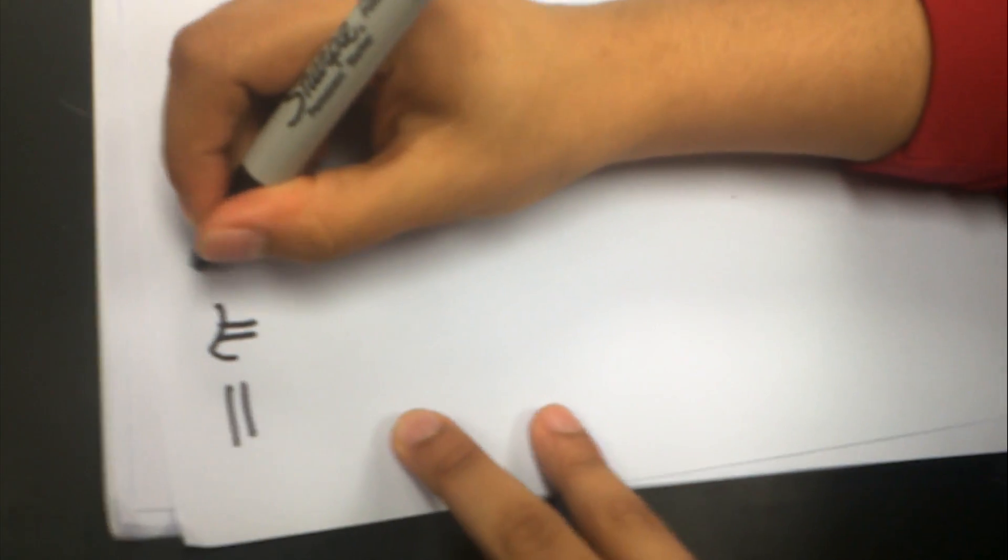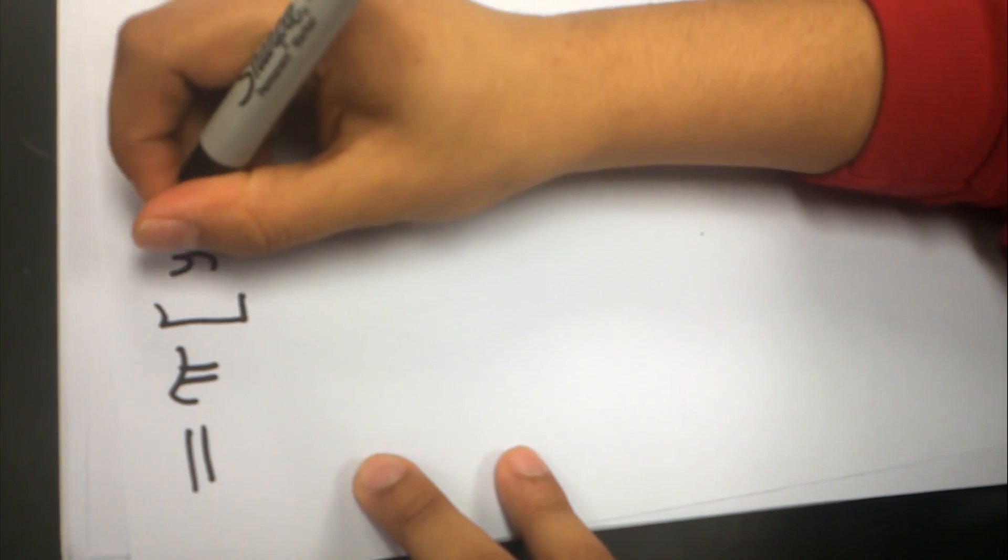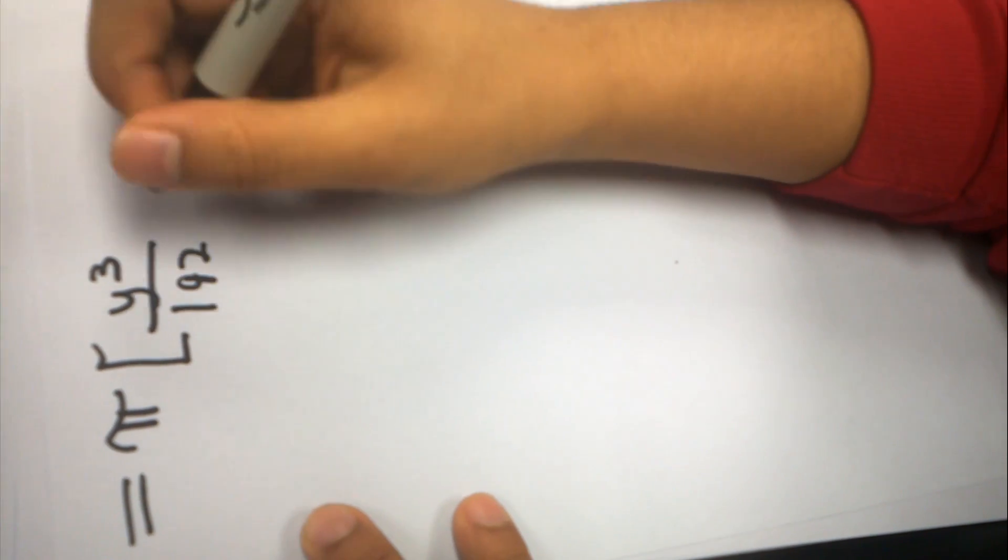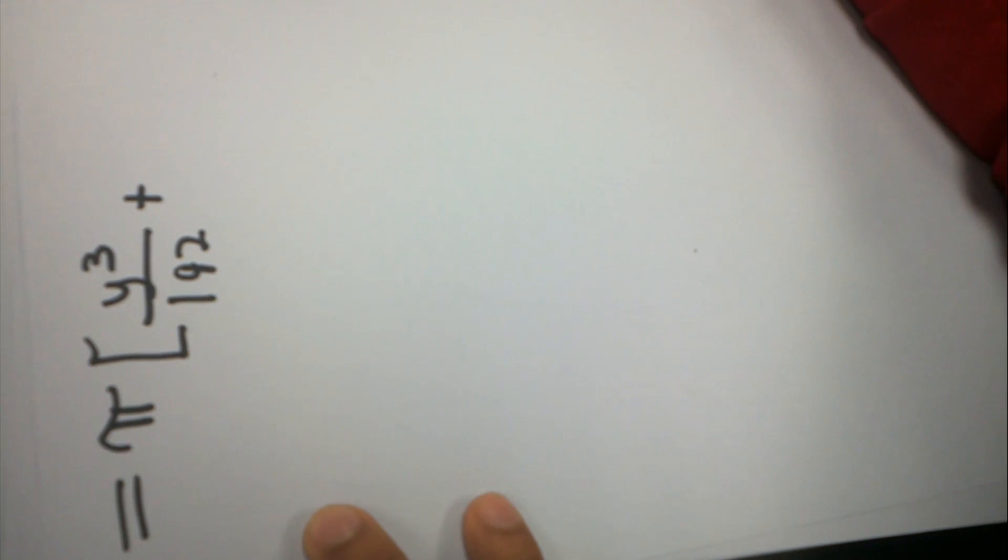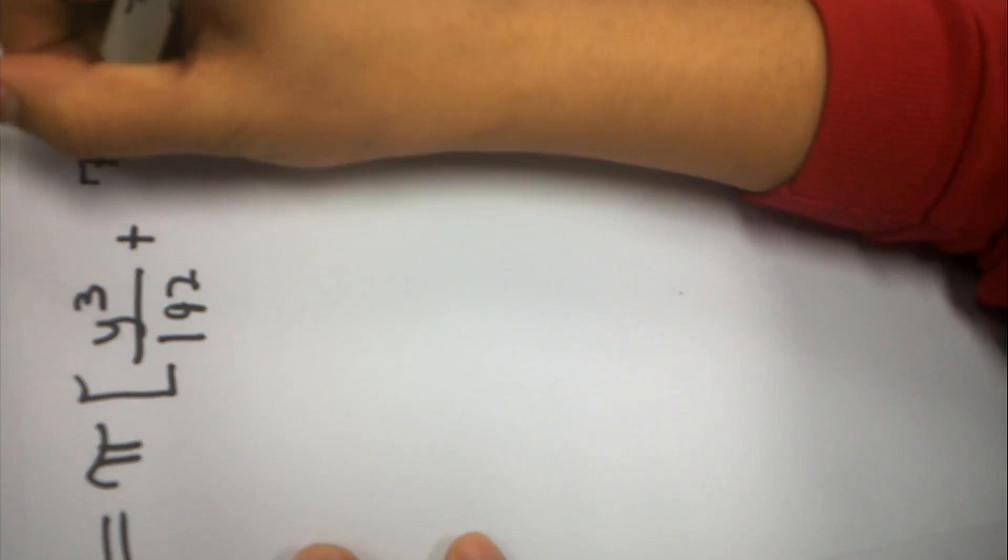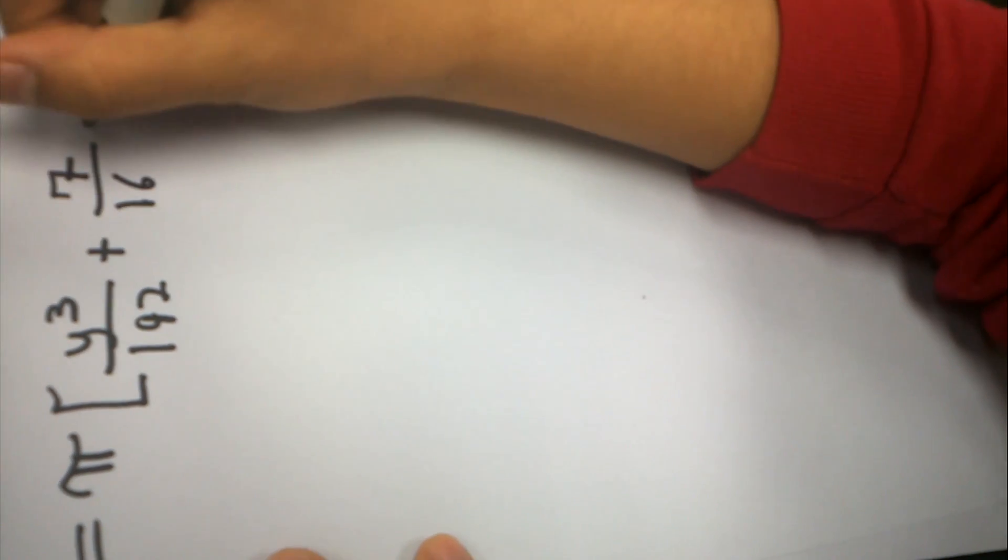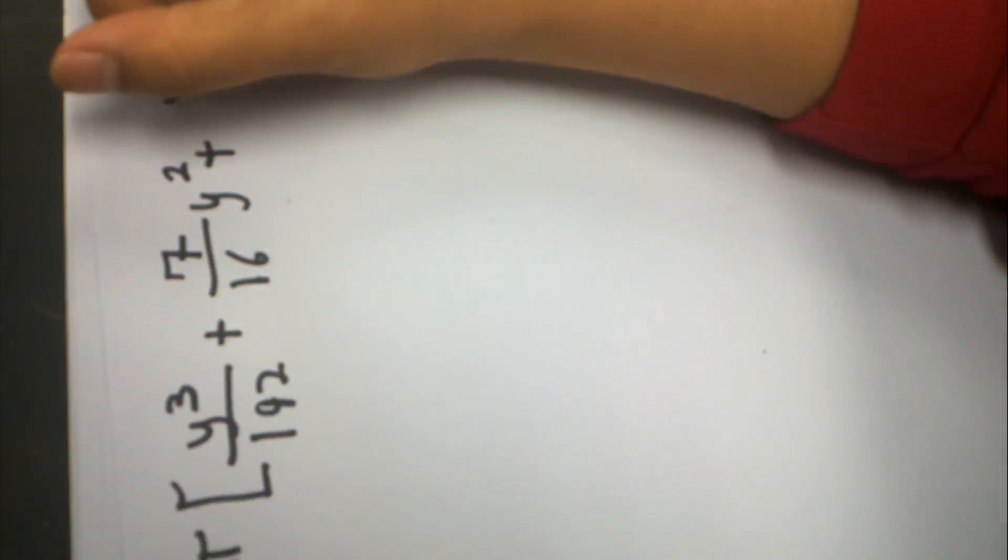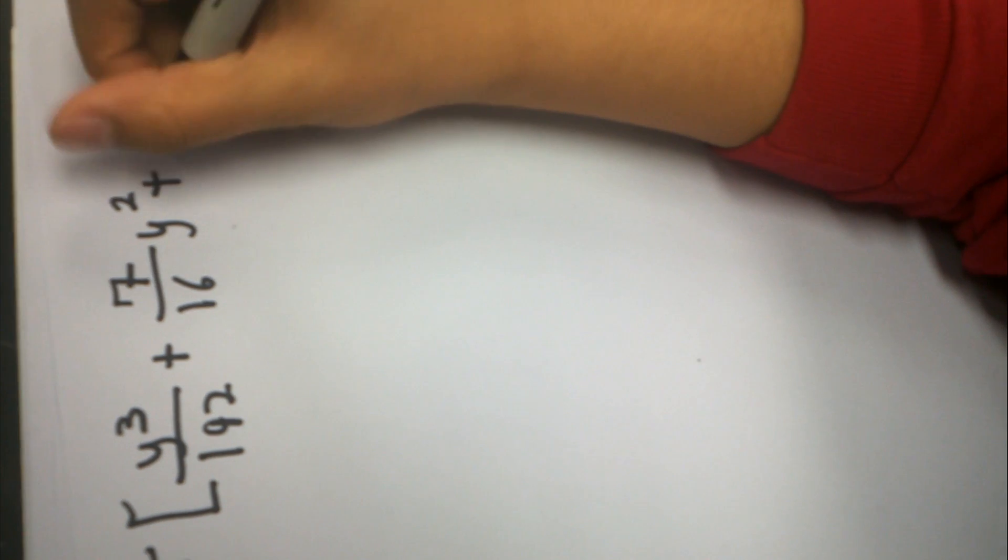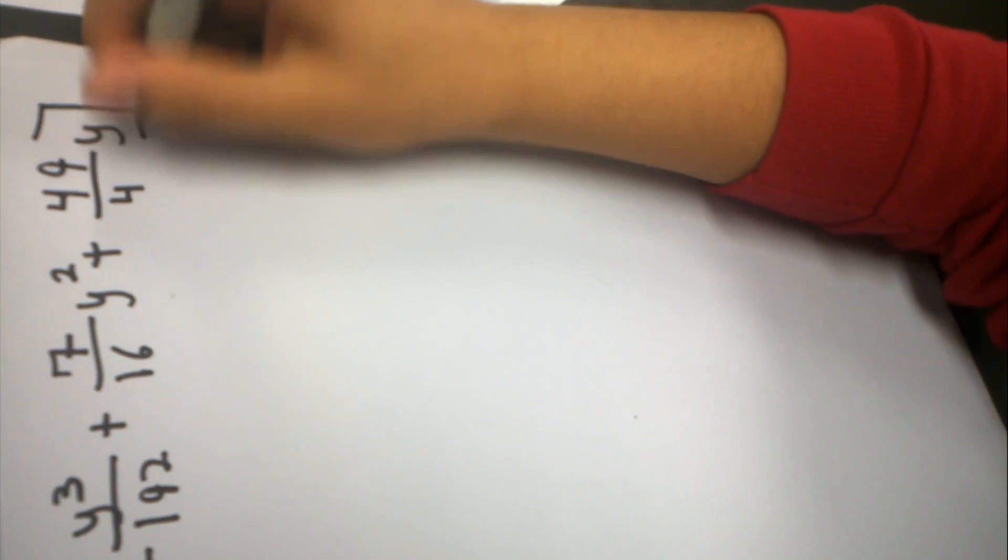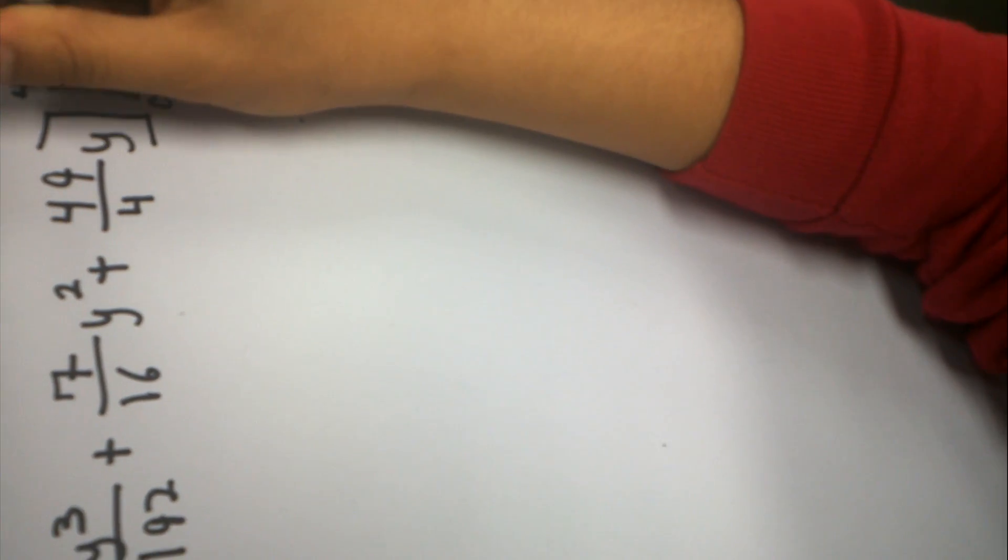So this will look like y³/192 plus, I'm going to integrate right here, 7/16y². Plus, I'm going to integrate for 49/4, and that becomes 49/4 times y. From 0 to 4.